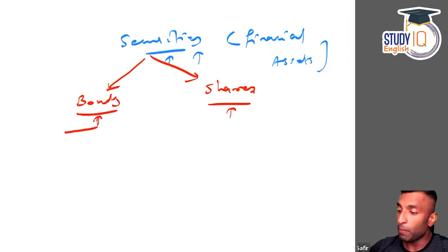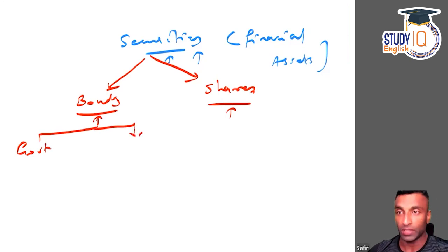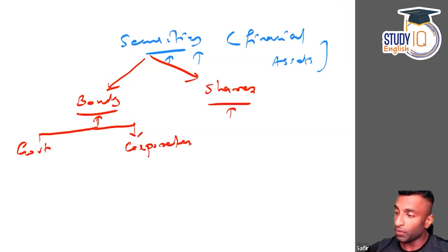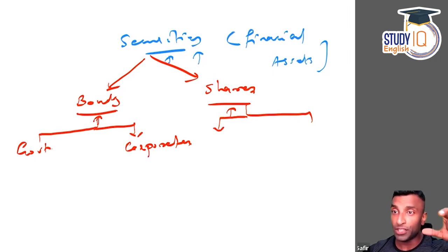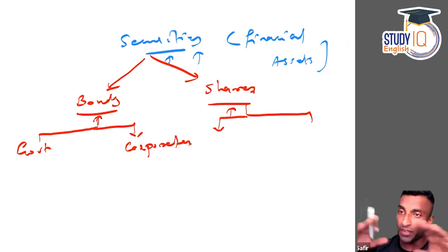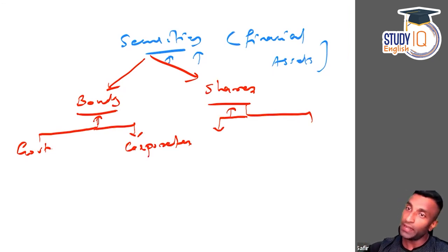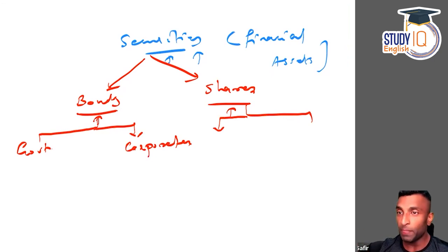When I talk about bonds, they can be government bonds or corporate/private bonds — corporates also issue bonds. When you talk about shares, there are two types: the normal ordinary share or equity share, and the preference share. These are two different instruments — it's not that some person got some preference over another. These are two different entities, two different financial assets.